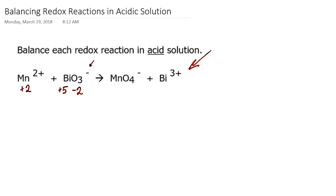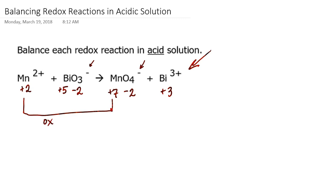In the permanganate ion, oxygen is in a −2 oxidation state: −2 times 4 is −8, and with a −1 charge overall, manganese must be +7. The bismuth cation is in the +3 oxidation state since the charge on the bismuth cation is 3+. Looking at the changing oxidation numbers, manganese is going from +2 to +7. Since it's getting more positive, that means it's losing electrons — oxidation is the loss of electrons — specifically losing 5 electrons.